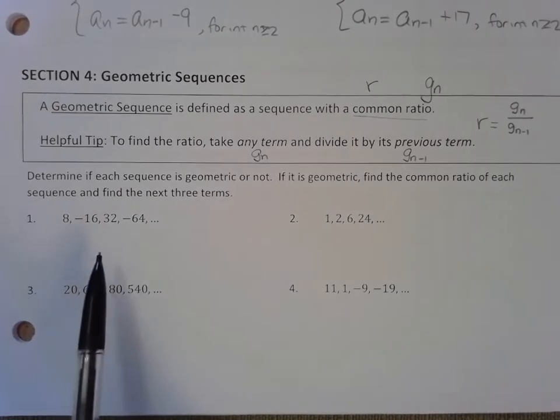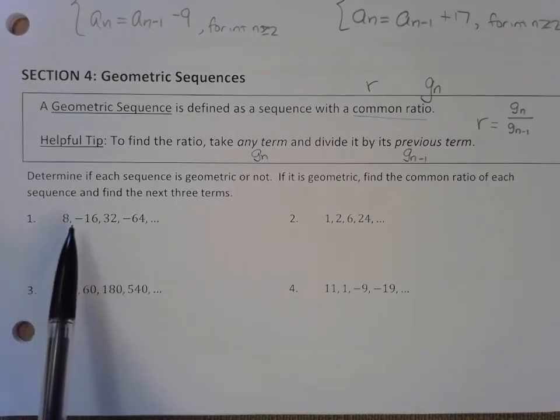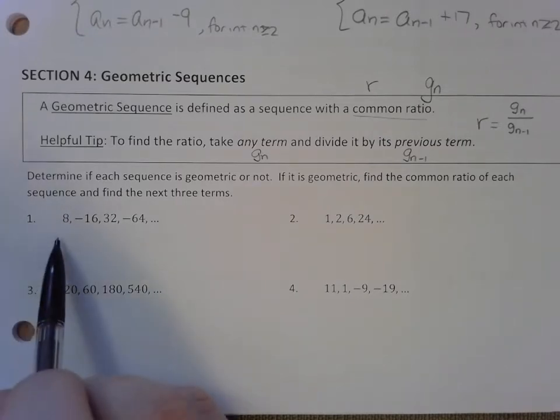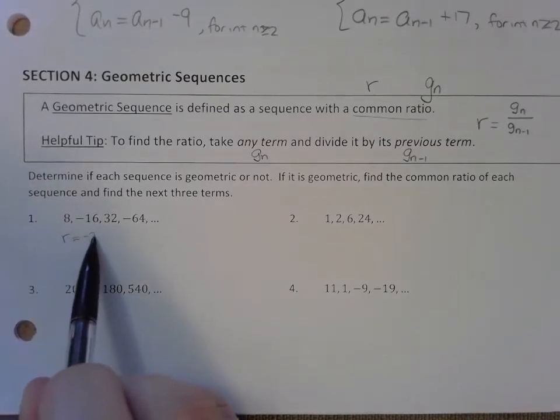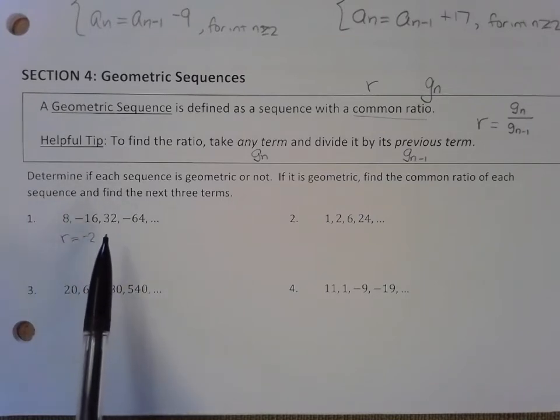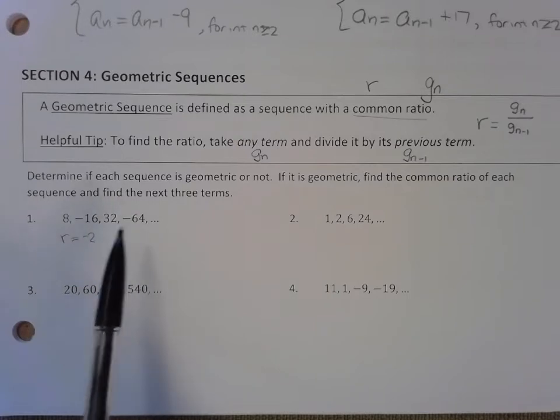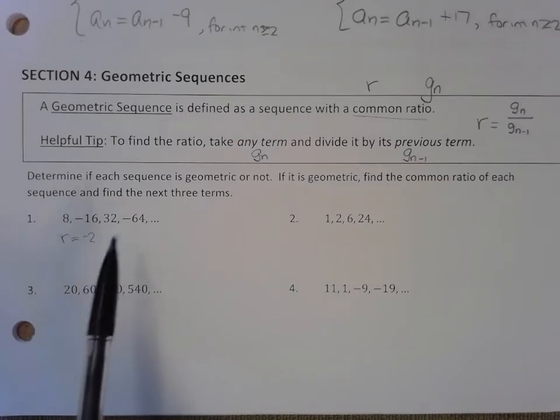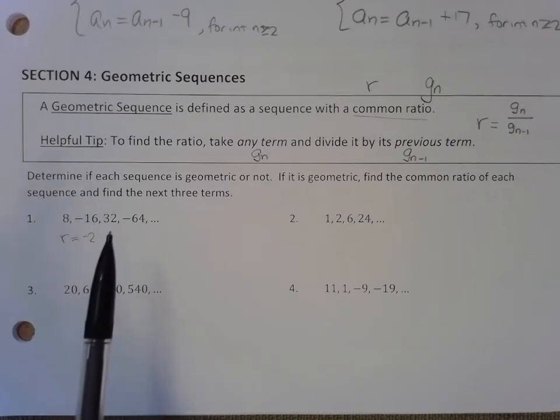Let's take a look if this first pattern is geometric. If I take the second term divided by the first term, I think that the ratio equals negative 2. If this is a geometric sequence, that ratio should be true for every pair of consecutive terms. If I divide negative 64 by positive 32, I do get negative 2. Negative 2 is our ratio for each pair. So we do know that this is geometric.